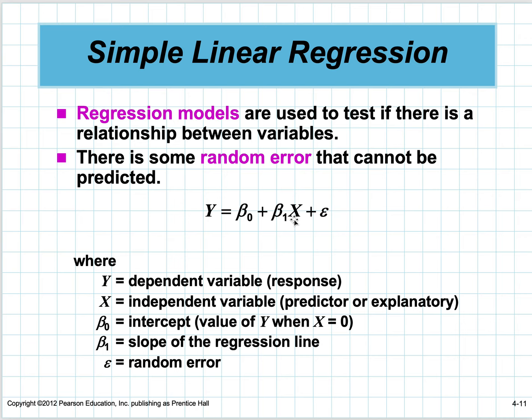y is the dependent variable or response variable. x is the independent variable, sometimes called predictor or explanatory variable. Beta zero is the intercept—the value of y when x is zero. Beta one is the slope, and e is the random error.